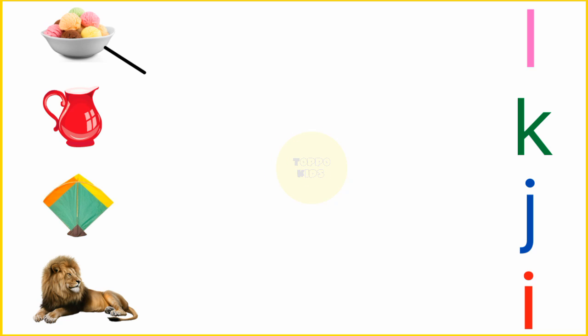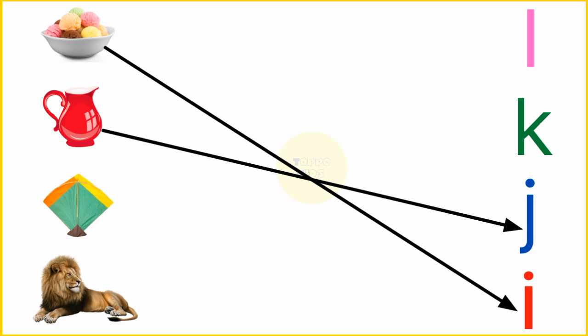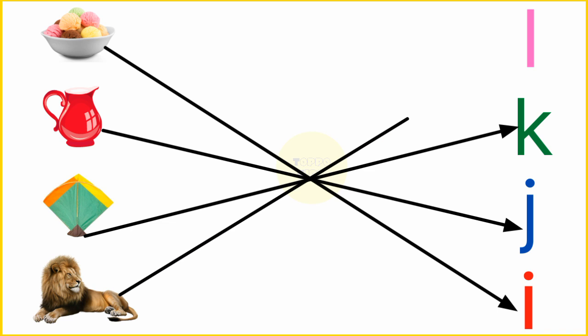I. I for ice cream. J. J for jug. K. K for kite. L. L for lion.